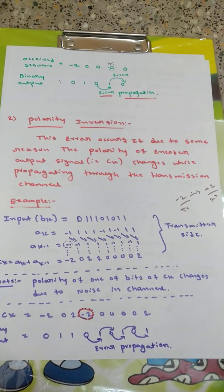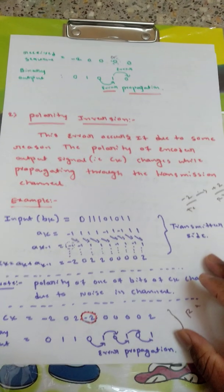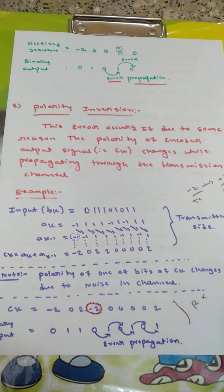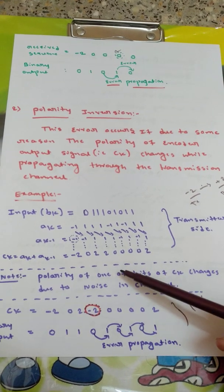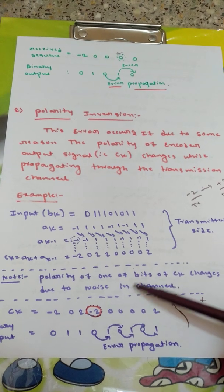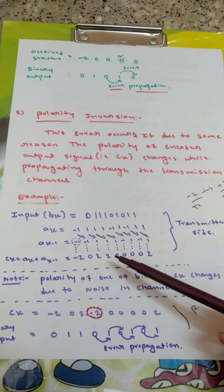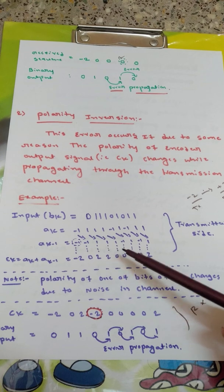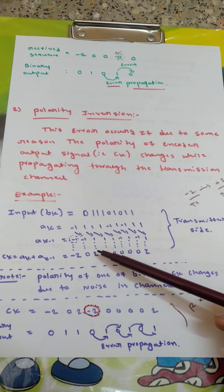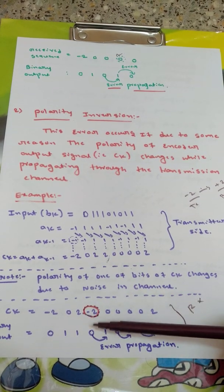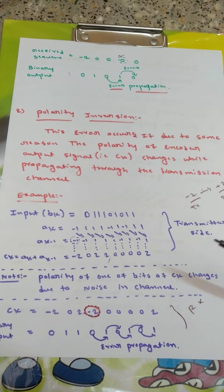Note here, this is the transmitter side and this is receiver side. This whole thing will be happening at the receiver. So this is the receiver part. Polarity of one of bits of CK changes due to noise in channel. While propagating through the channel, the polarity of one of the bits of CK will change. So that bit I have rounded in red color here. CK equal to minus 2, 0 and 2, this bit will be changing to minus 2. So polarity of this is changing from positive to negative. Then I have written 4 bits as it is and that 2 as it is.